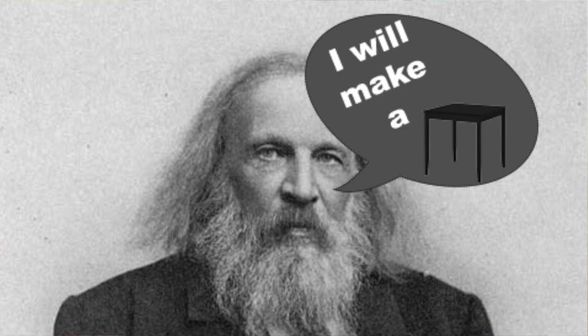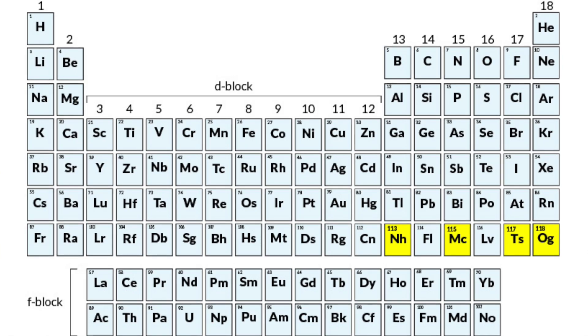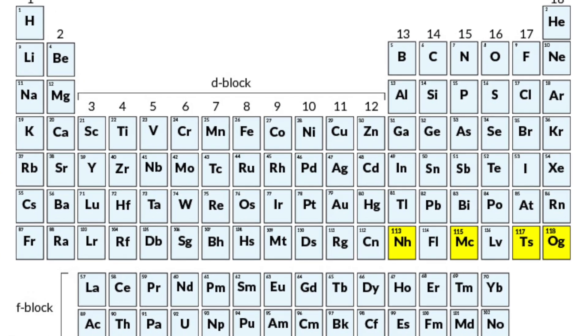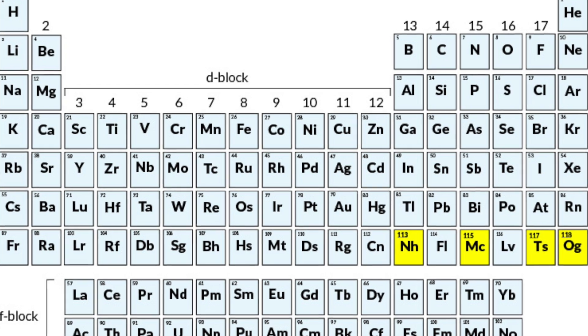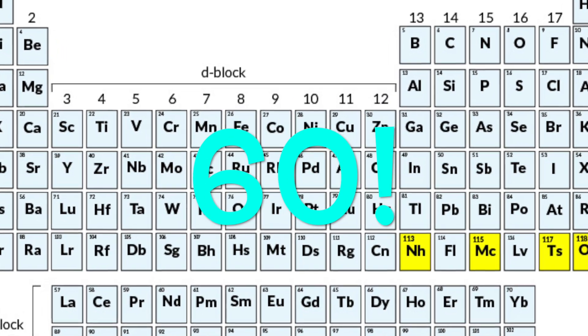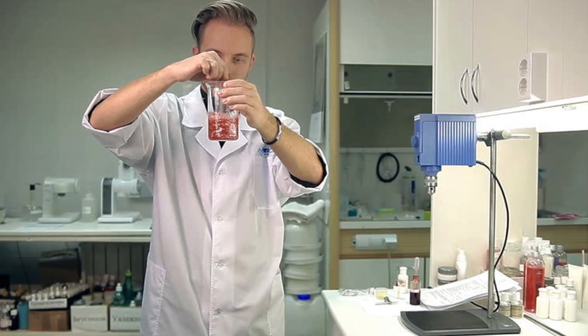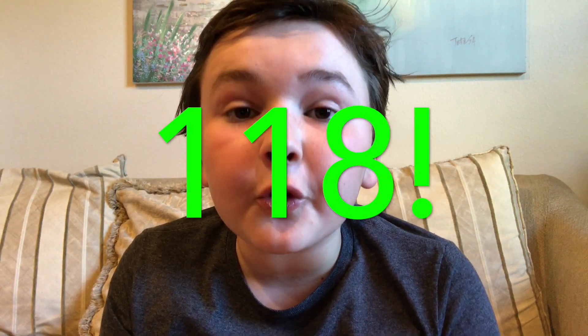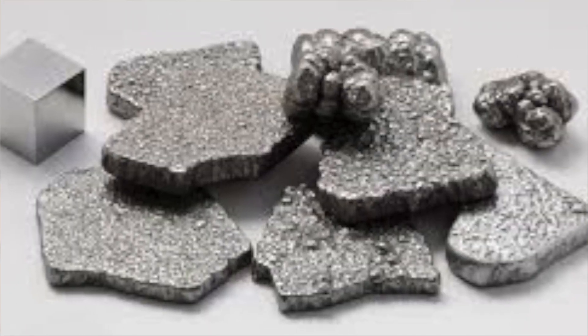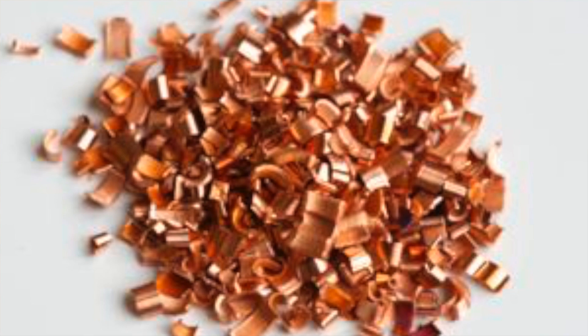The first Periodic Table was created in 1869 by a Russian chemist named Dmitry Mendeleev. However, since the first Periodic Table, another 60 different elements have been discovered, and scientists keep reorganizing the table to fit new elements. There are 118 different elements, like iron, oxygen, hydrogen, and copper.